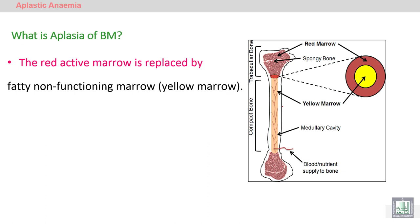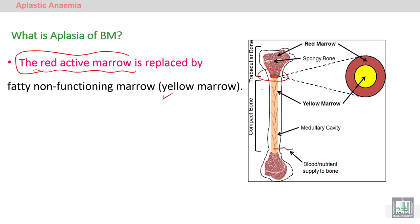Aplasia occurs because of a stem cell defect. A stem cell defect leads to reduced active marrow. The red active marrow is replaced by yellow marrow — non-functioning marrow. You can see here the red marrow and the yellow marrow; the red is active.